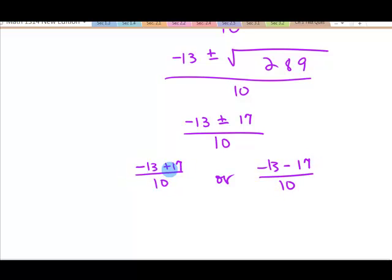Well, that's 4 on the top and 10 on the bottom. That's 4 tenths, which is 2 fifths. There's one thing. And then we've got negative 30 over 10, which is negative 3. So I'm not sure if you just missed something up in this part,